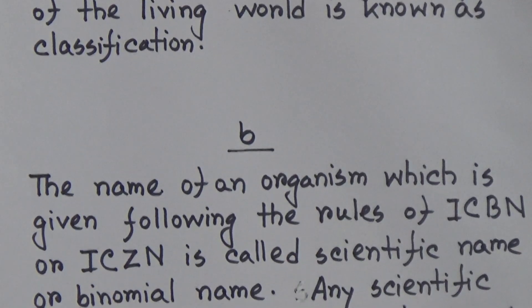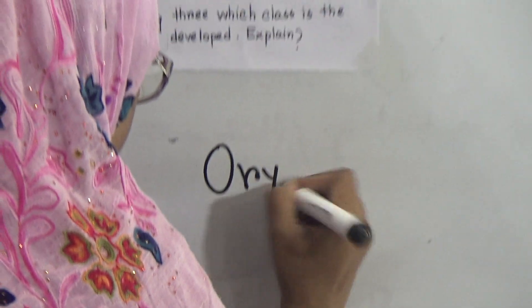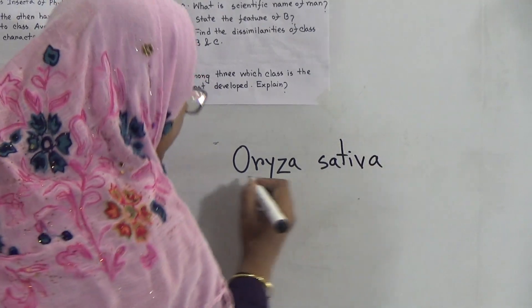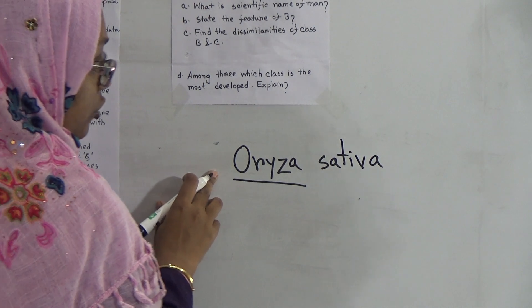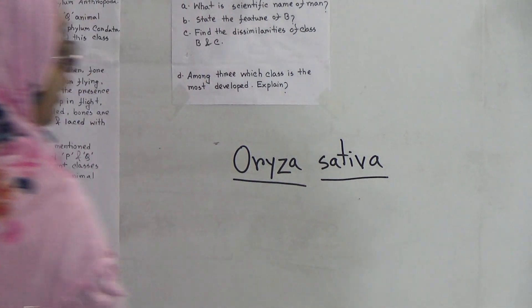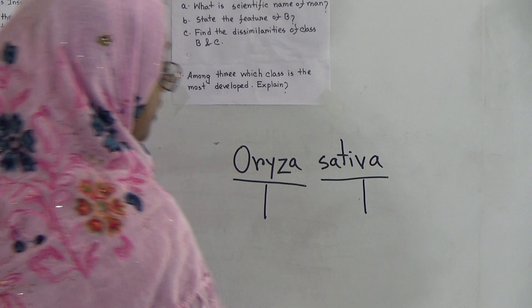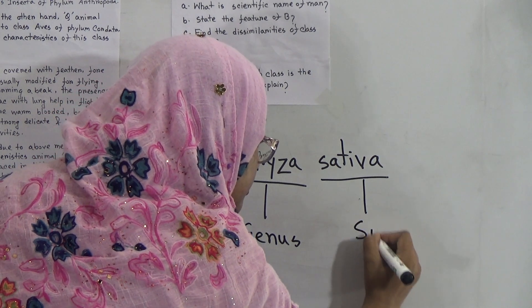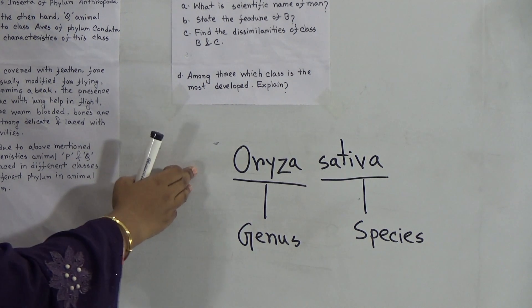If we consider the scientific name of rice, it is Oryza sativa. If you write any scientific name by hand, you have to give two separate underlines below the name. The first underlined portion is the genus name and the second underlined portion is the species name. This is the scientific name of rice.